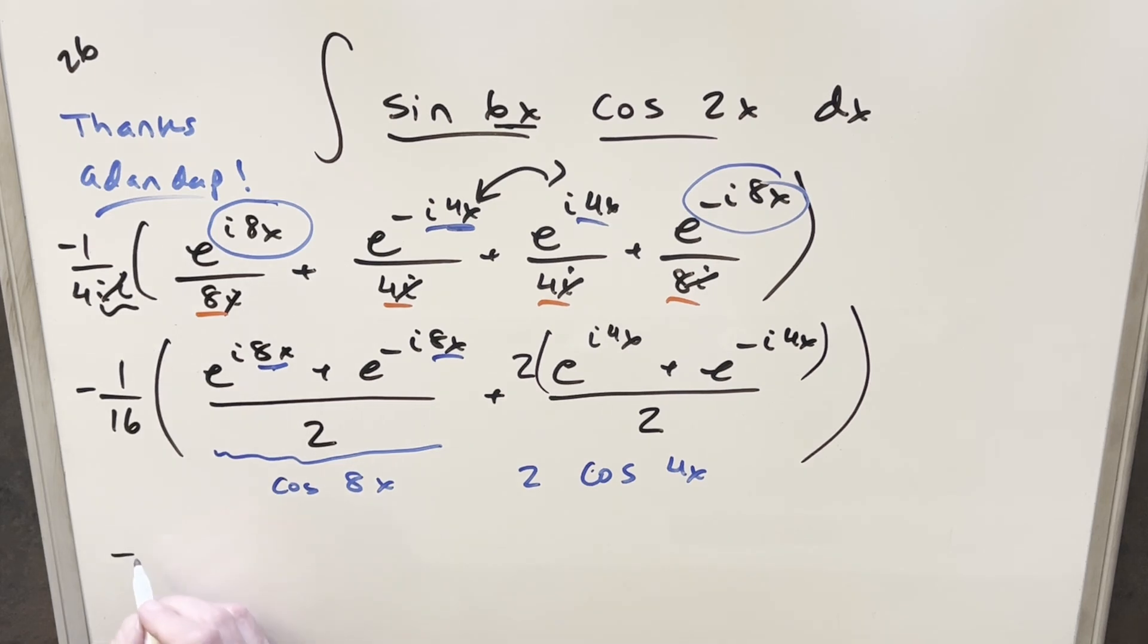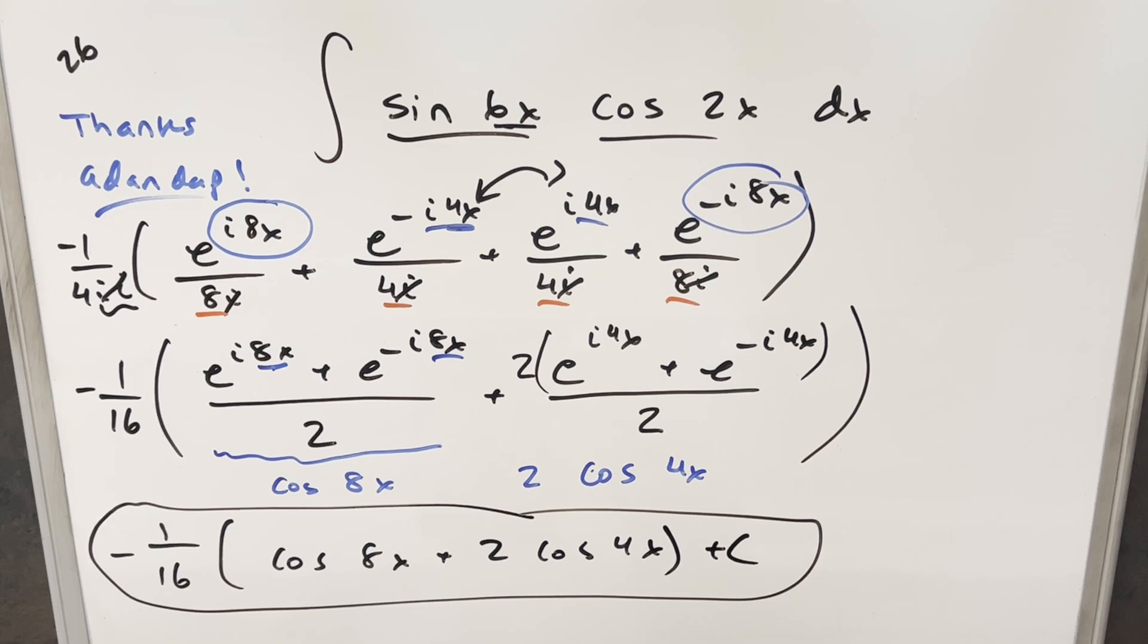So putting this all together, we just have our final solution minus 1 over 16, cosine 8x plus 2 cosine 4x plus C, and that's it. Okay, I don't know if it's faster doing it with the complex method. But one thing I like about it is you don't have to remember that formula. So this is something that you can, you still have to remember Euler's formula, but that's usually pretty easy to remember. So I do see some advantages to this method. And also it's pretty interesting. So that's it for today. Thanks everyone for watching. Have a good day.